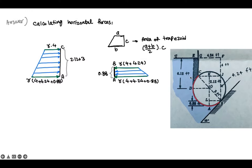At point C, we have some water on top, and the pressure at point C is gamma times the height of the water above it. That height is 4 feet — CG is 4 feet — so the pressure force at C is gamma times 4. At point A, the horizontal pressure force is the hydrostatic force based on the total height above point A.